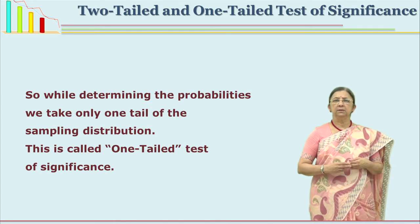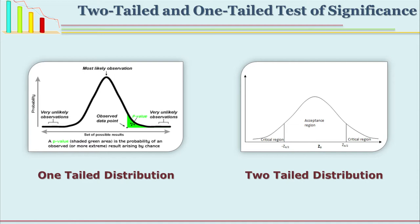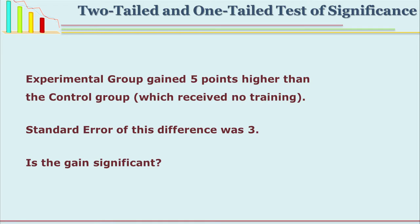This is called a one-tailed significance test. In figure 1, only the part on the right-hand side is colored, meaning the researcher is interested in only one-tailed significance. In figure 2, both ends are equally important. Let us take one example: the researcher was interested in improving reading comprehension, so he used one particular strategy with the experimental group; the control group did not get any inputs. At the end of the program, the difference in control and experimental group was found to be 5, and the standard error of difference is 3.